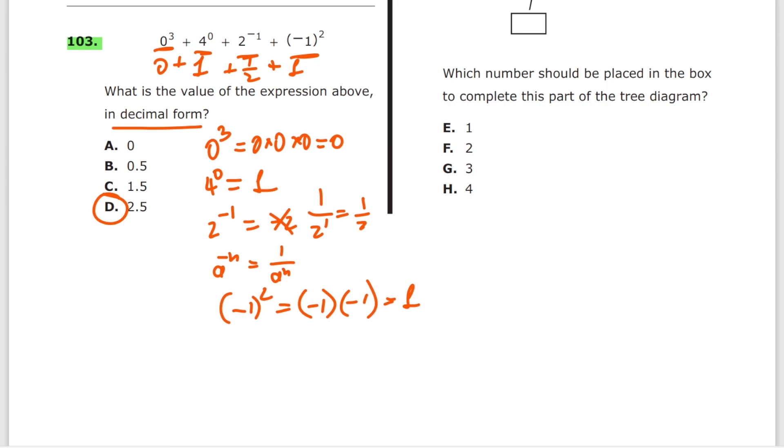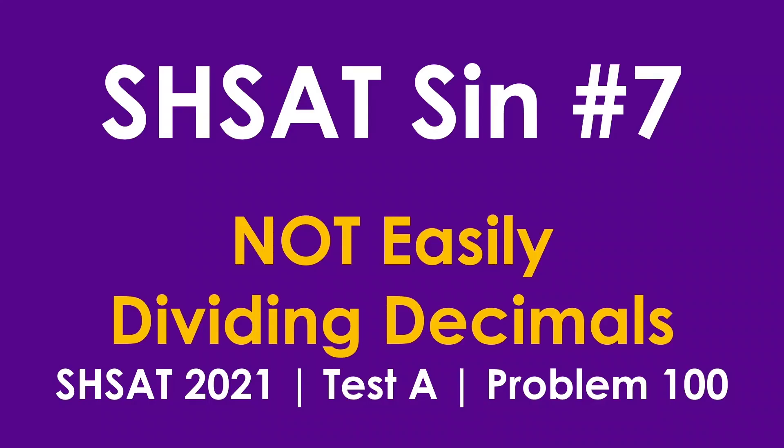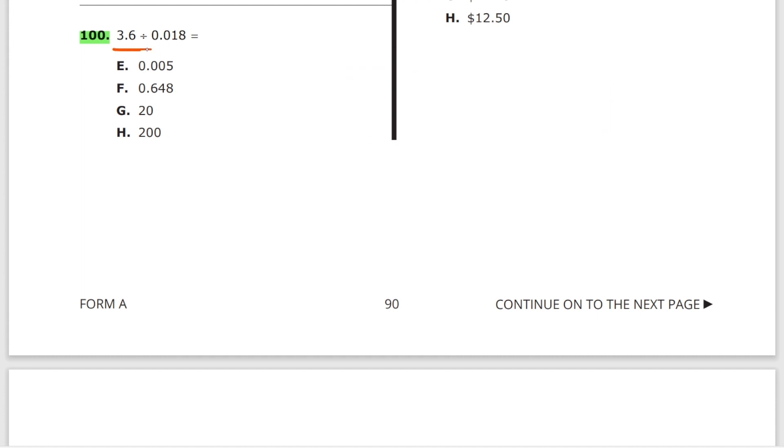Finally, SHSAT sin number seven: not easily dividing decimals. We are going to cover problem number 100 from test A of SHSAT 2021. 3.6 divided by 0.018. Most of you will skip this problem. Almost every single student just skips it. It's too complicated. What to do? Easy.